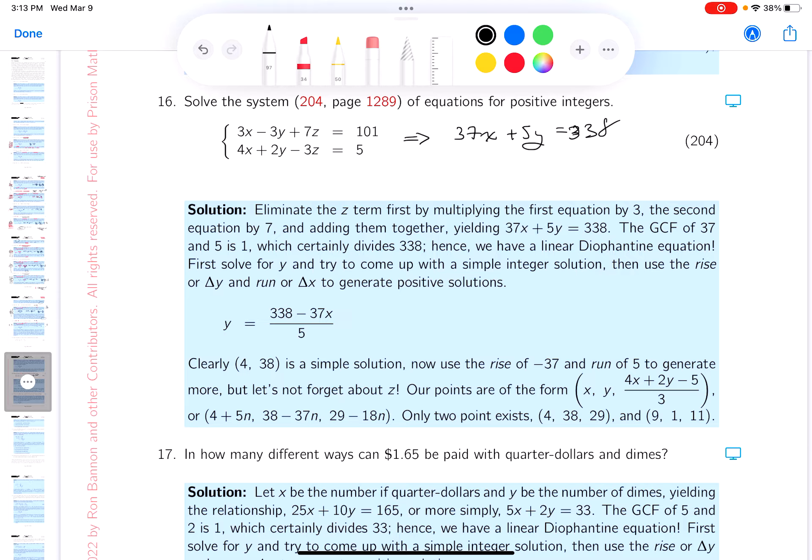What do I do now? Solve for y. That's 338 minus 37x over 5. And I'll be honest with you, this is where I start to struggle. All right. The other part is I'm not really struggling too much, but I need to get a multiple of 5 on top because I want it to be divisible by 5.